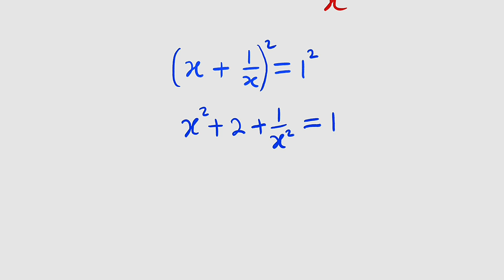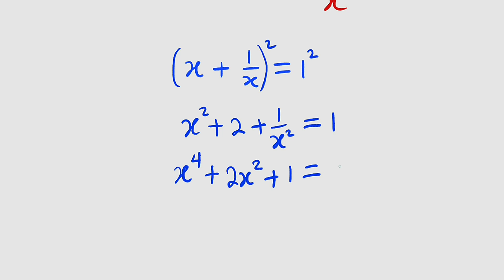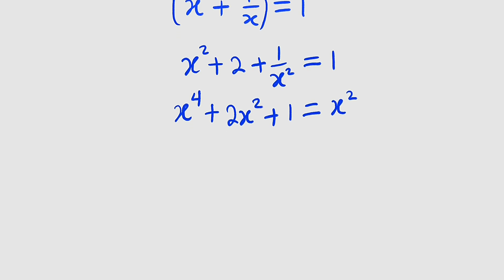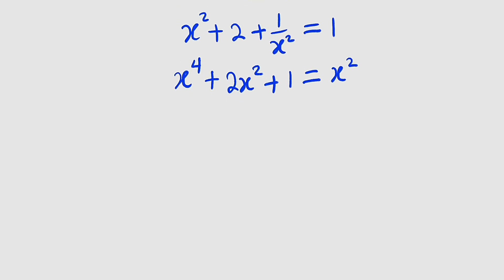Next, to clear the fraction, I want us to multiply every single term by x squared. So x squared multiplied by x squared gives us x to the power of 4, plus 2 multiplied by x squared is 2x squared, plus 1 over x squared multiplied by x squared is 1. On the right-hand side, we have 1 times x squared equal to x squared. I want us to make x to the power of 4 the subject.